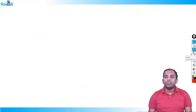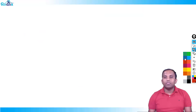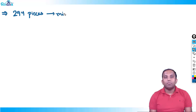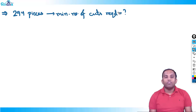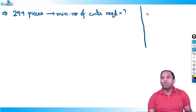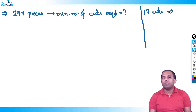Now the reverse problem: if 294 pieces are cut out from a cube, what is the minimum number of cuts required? We already showed that 17 cuts with distribution 6+6+5 gives 7 × 7 × 6 = 294 pieces. So the minimum number of cuts required for 294 pieces is 17.